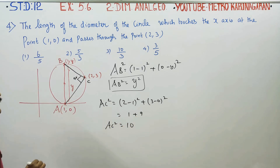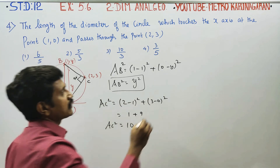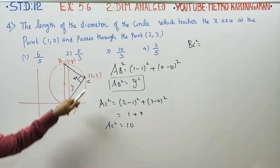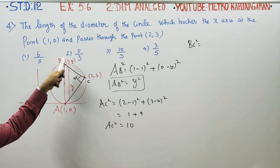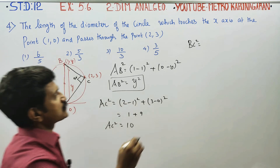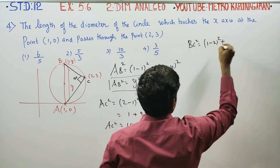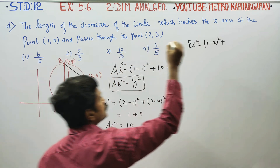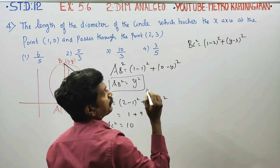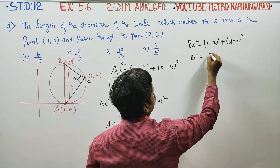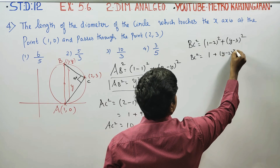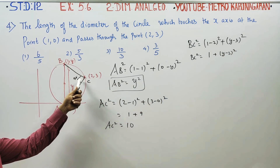After finding AC², now find BC². BC² is equal to, using the same distance formula: (x2 - x1)² + (y2 - y1)². That is (1 - 2)² + (y - 3)². So BC² = (-1)² + (y - 3)² = 1 + (y - 3)².